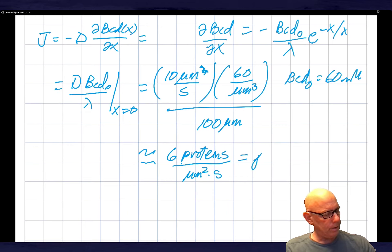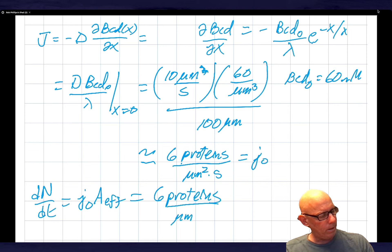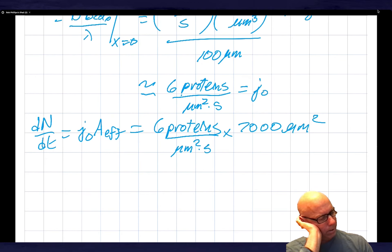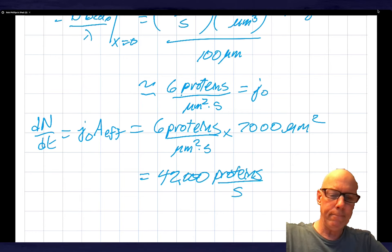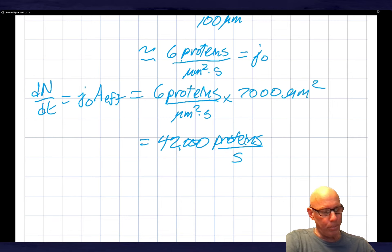And so dN/dt is going to be given by J zero times A effective. So I'm saying 6 proteins per micron squared per second. And then times 7000 micron squared is my effective area. So this gives me 42,000 proteins per second or something like that.